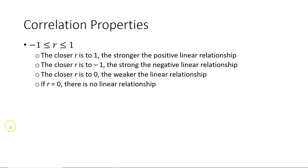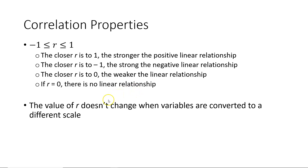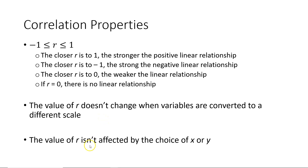Let's consider some properties of the linear correlation coefficient. First, values for R range between negative 1 and positive 1 inclusive. The closer R is to positive 1, the stronger the positive linear relationship; the closer it is to negative 1, the stronger the negative linear relationship. The closer it is to 0, the weaker the linear relationship, and if R equals 0, there is no linear relationship between the two variables. The value of R doesn't change when the two variables are converted to a different scale or different units. And the value of R isn't affected by which variable is chosen as the x, or explanatory variable, or y, the response variable.